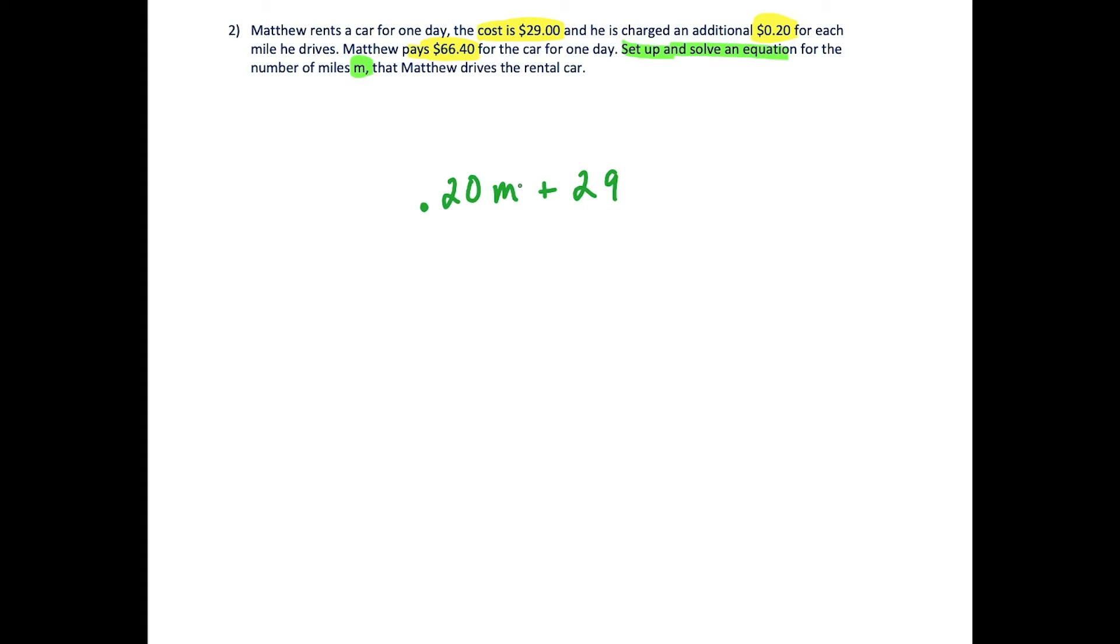For example, if he drives two miles, he'd be charged an additional 40 cents, giving us 40 cents plus $29 equals $29.40. This is the correct setup for our equation. We know his total bill is $66.40.